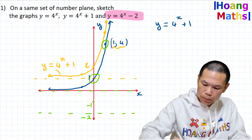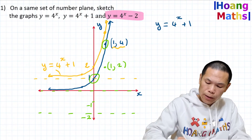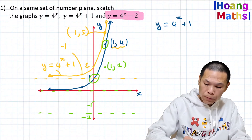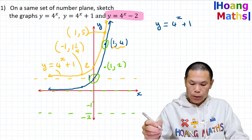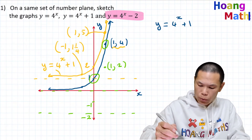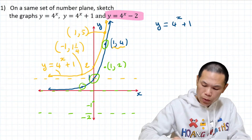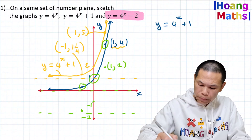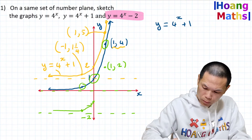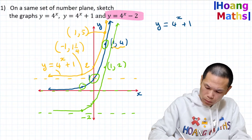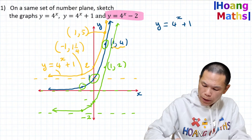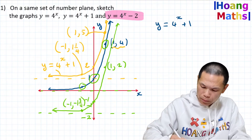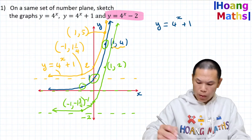The point (1, 4) moves down two units to become (1, 2). The point (-1, 1/4) moves down two units to become (-1, -1¾). Joining these points gives the graph of y = 4^(x-2).